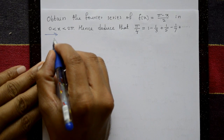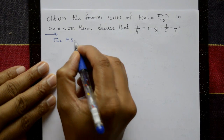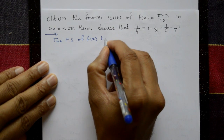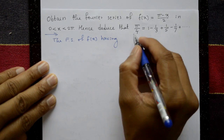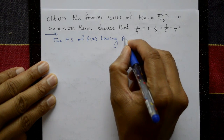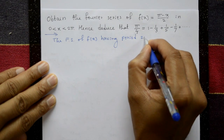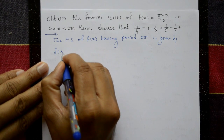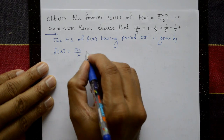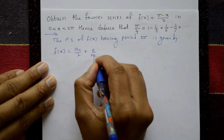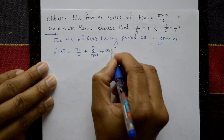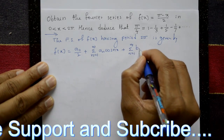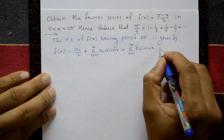The Fourier series of f(x) having period 2π is given by: f(x) = a₀/2 + Σ(n=1 to ∞) aₙ cos(nx) + Σ(n=1 to ∞) bₙ sin(nx). This is equation number 1.